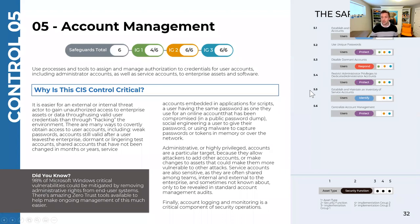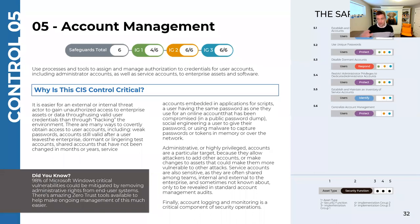Restricting administrator privileges is super important because most attacks happen when someone is given permissions on the system at a higher level than they should have. Those are all four from implementation group one. The last two safeguards are more about inventory and centrally managing accounts, and those are implementation group two.